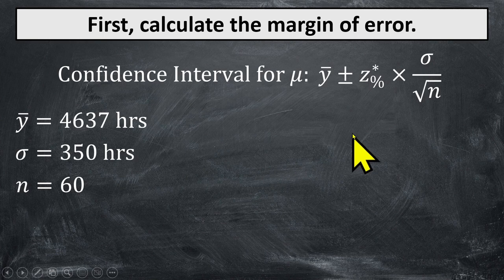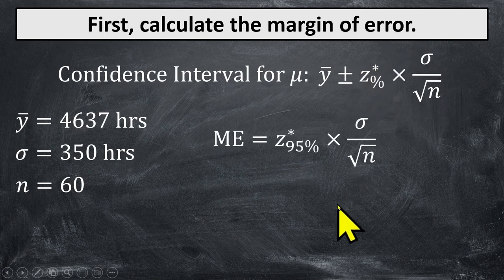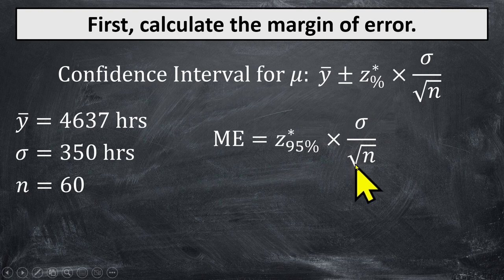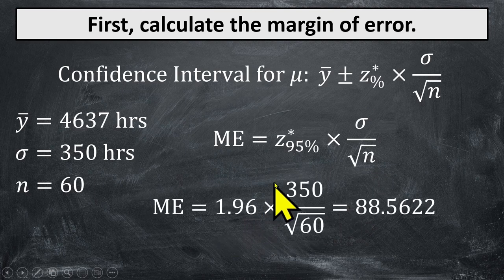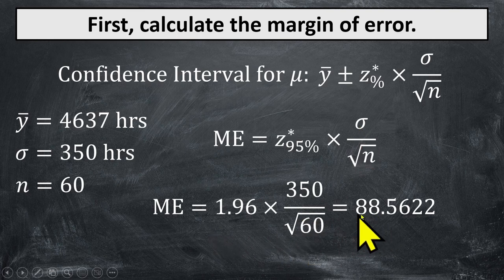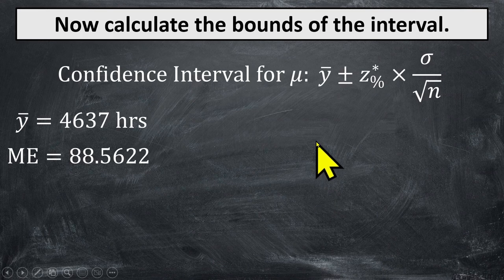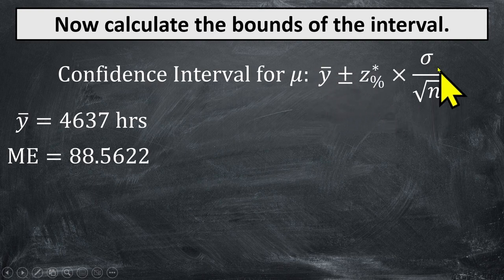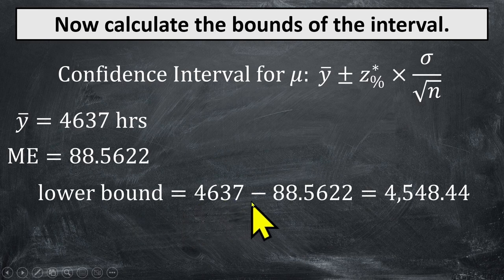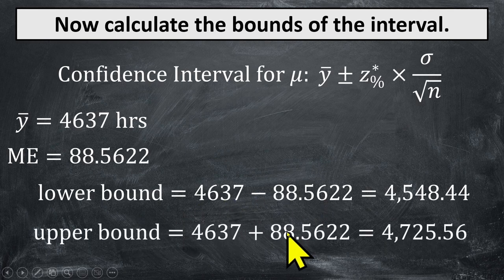Let's first calculate the margin of error. We're going to take the z critical value for a 95% confidence interval and multiply by the standard deviation of the sample mean. That's 1.96 times 350 divided by the square root of 60, giving us a margin of error of just about 88 or 89 hours. To calculate the bounds of the interval, we take the sample mean plus or minus that margin of error. The lower bound is the sample mean minus the margin of error, and the upper bound is the sample mean plus the margin of error, giving us these two values.